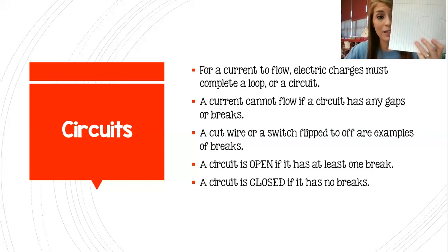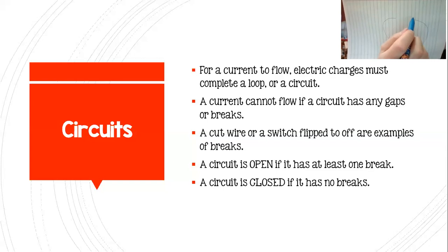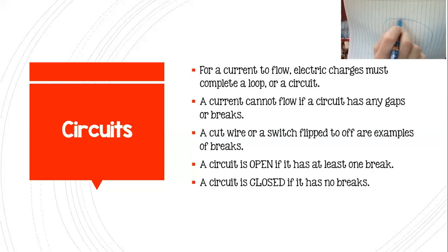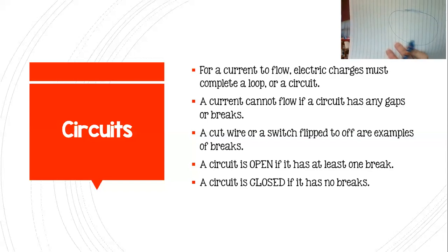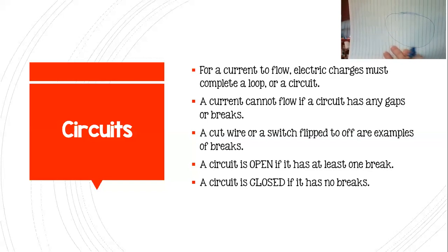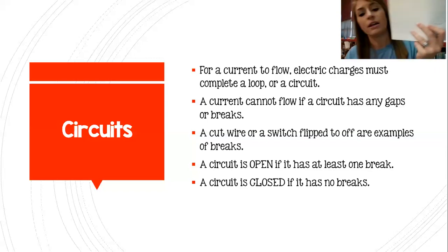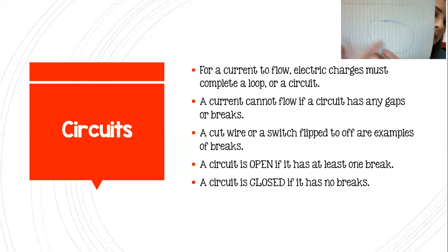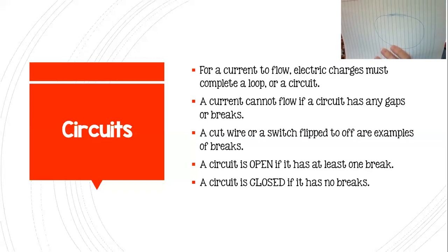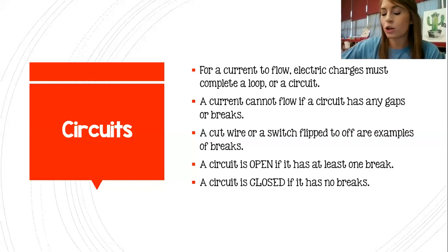A circuit is closed if it has no break. So in order to close this circuit, all we have to do is finish it and turn that light switch on. Once that light switch gets turned on, that gap is closed and that electricity is able to flow all the way through and keep those lights on, or the TV running, or keep your phone charging. Closed means electricity is flowing. Open means it's not.